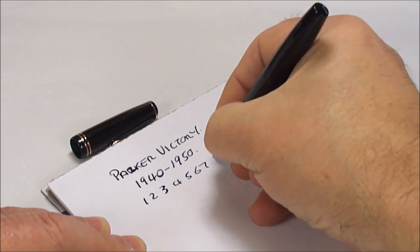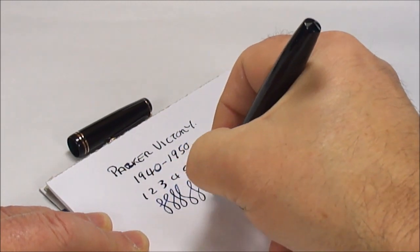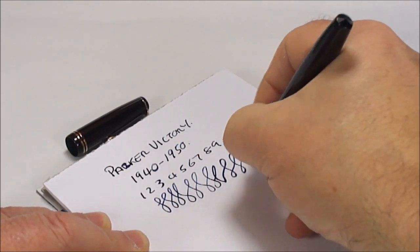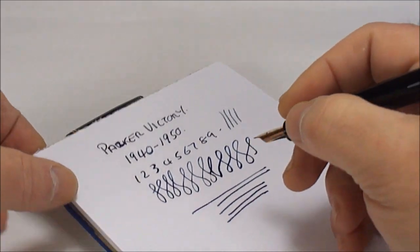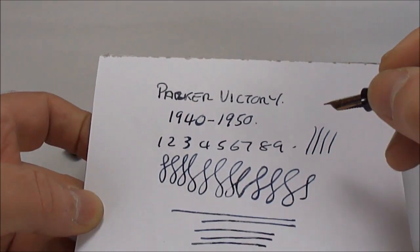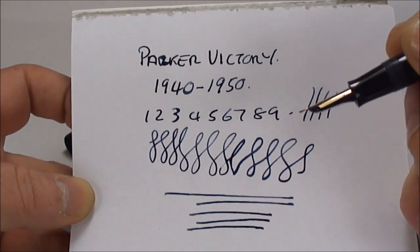Writing very nicely. Five, six, seven, eight, nine. Let's do some figure of eights for you. There we go. Couple of lines. Quite a hard nib. There's no flexibility in the nib, as you'd expect from this particular nib.